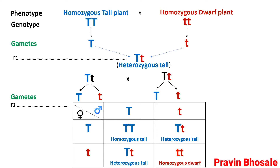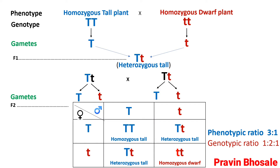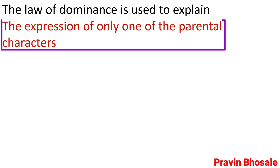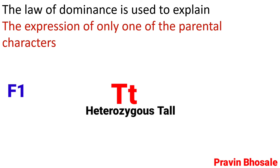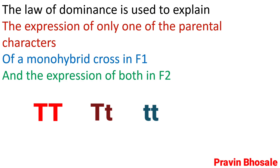Coming to genotype, we can see one plant is homozygous tall, two plants are heterozygous tall, and one plant is homozygous dwarf. So the genotypic ratio will be 1 is to 2 is to 1. Law of dominance is used to explain the expression of only one of the parental characters seen in F1 generation of a monohybrid cross. And the expression of both alleles in F2 generation, especially the allele for dwarfness which is recessive, but when recessive alleles are in homozygous condition, they will express themselves.